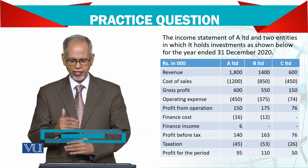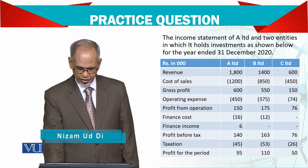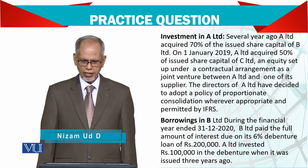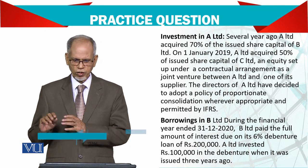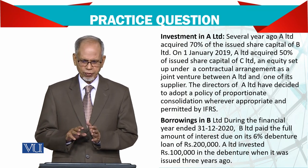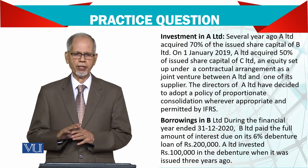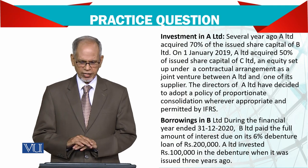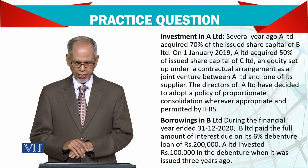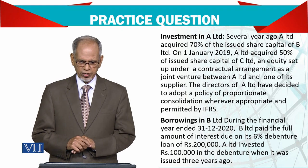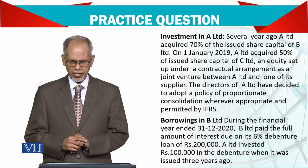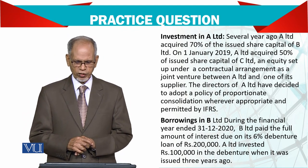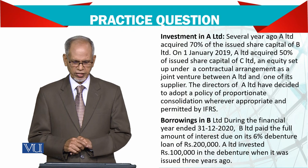I have extended the question a little. Now, Investment: A Limited several years ago acquired 70% of the issued share capital of B Limited — meaning A bought 70% shares of B. And A Limited acquired 50% shares of C Limited, set up under a contractual arrangement as a joint venture between A Limited and one of its suppliers.